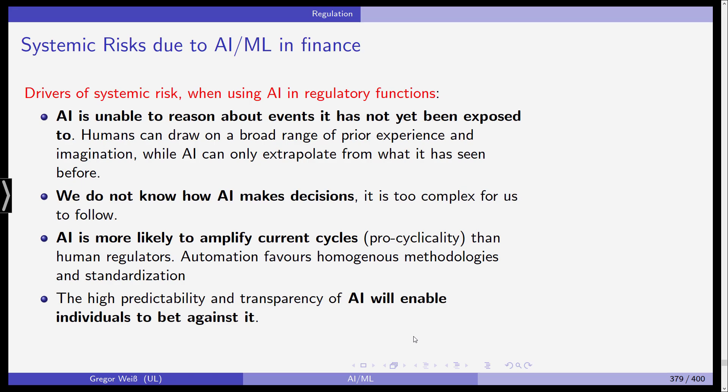Automation favors homogenous methodologies and standardization, leading to pro-cyclicality. Pro-cyclical regulation means that when markets go down, you go hard on banks and actually strengthen the crisis. In a boom phase, you loosen regulation, causing the next crisis. Anti-cyclical regulation — what financial economists now believe is smarter — means loosening regulation when the economy worsens so it recovers more quickly, and tightening regulation in boom phases to prevent excessive lending. Unfortunately, AI is quite pro-cyclical.